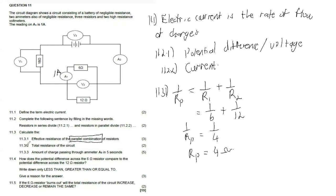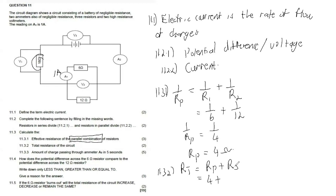Then 11.3.2 says calculate the total resistance of the circuit. Now that we have the effective resistance of the parallel combination, total resistance is R_P + R_S. The parallel combination is 4 ohms, and the only resistor in series is 18 ohms, so 4 + 18 = 22 ohms. Our total resistance is 22 ohms.